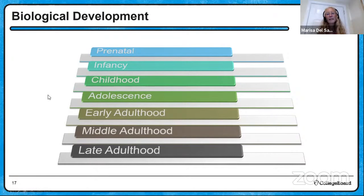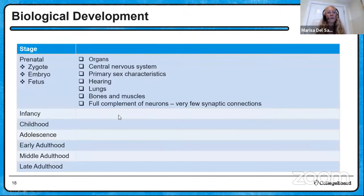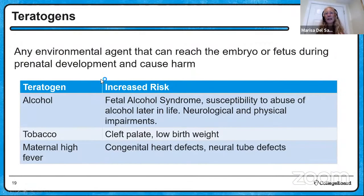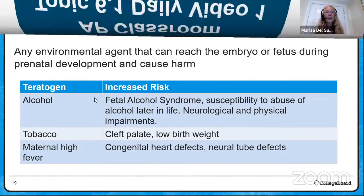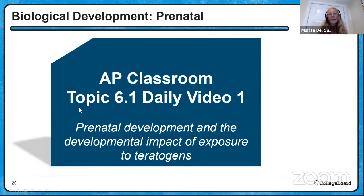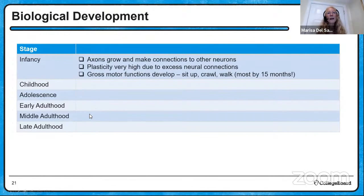Moving into biological development — I won't spend a lot of time in detail here, just an overview. I showed you a picture of the zygote; there's also an embryo and a fetus before you're born. During this period inside the mother's womb, organs develop, the brain and spinal cord form, you have a full complement of neurons with very few connections, and primary sex characteristics develop. What can happen during that development period is that exposure to any environmental harmful substance called a teratogen could impact development — alcohol, tobacco, maternal high fever, and even maternal stress can remove protective epigenetic markers or keep harmful markers in place when they shouldn't be.